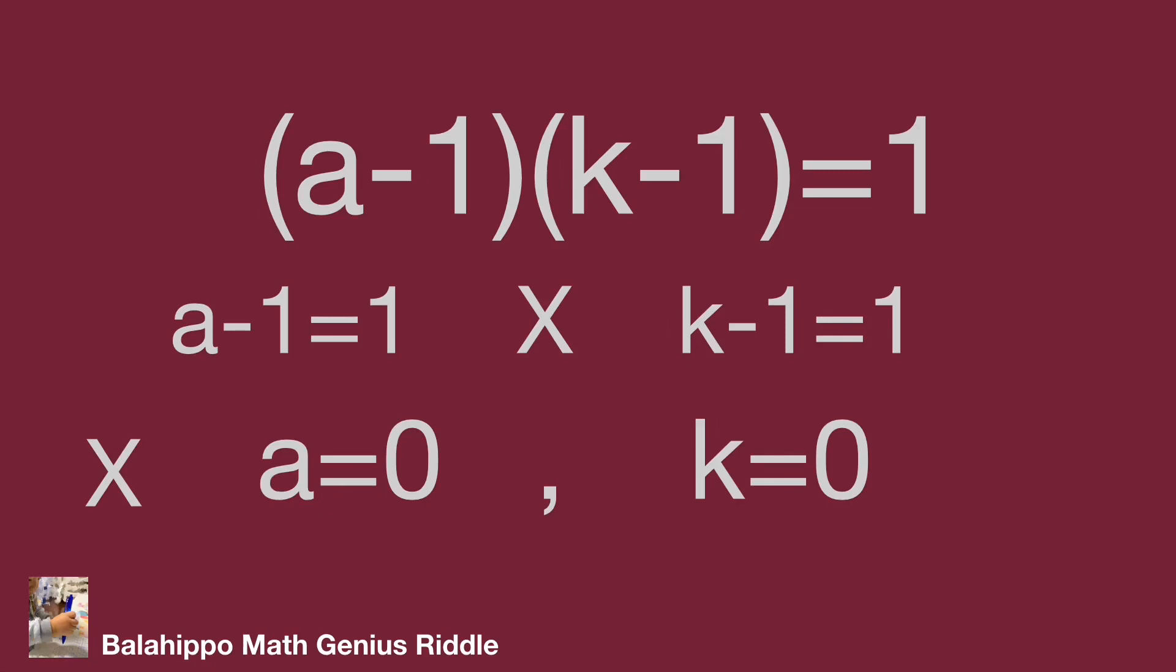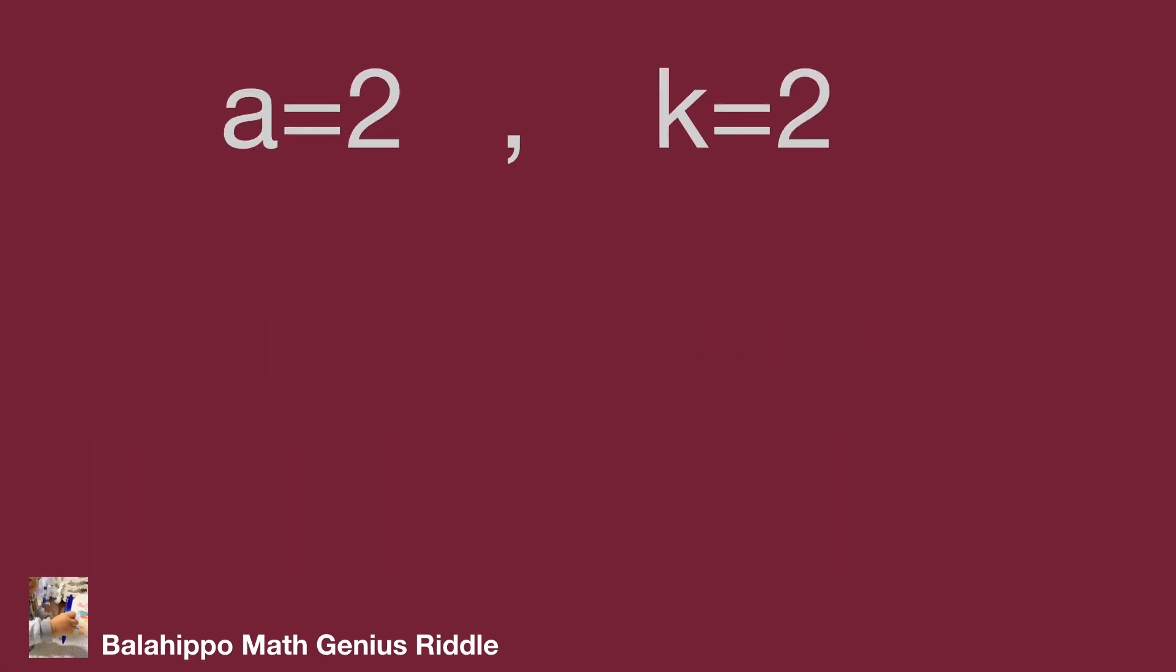Therefore we get A equals 2 and K equals 2. K equals BC, then BC equals 2. Same thinking: BC could be 1 times 2 or negative group minus 1 times minus 2.